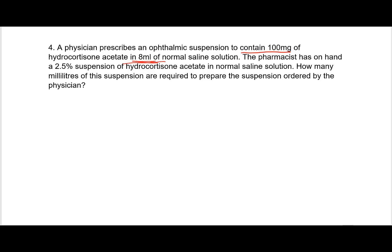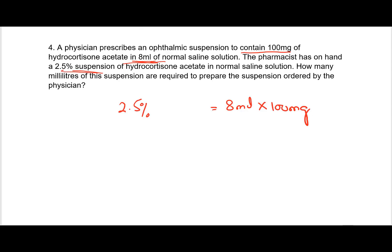Next question: a physician prescribes an ophthalmic suspension to contain 100 milligrams in 8 milliliters. The pharmacist has a 2.5% suspension. So I need to make 8 milliliters containing 100 milligrams. How many milliliters of the 2.5% suspension would I need? Can we use C1V1 = C2V2 here?